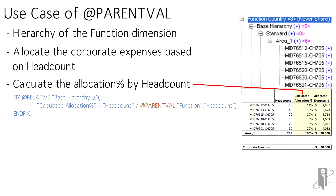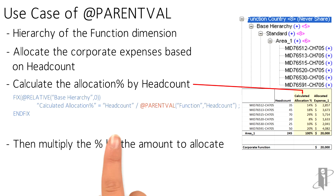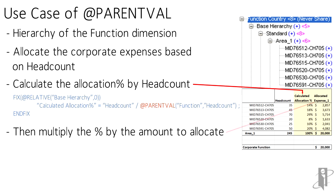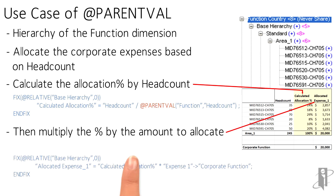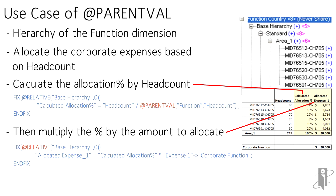Using atParentFile, the dimension name is placed, which in this case is function, and the member to capture is headcount. Lastly, you multiply the allocation percent by the amount to allocate, and this piece is the total expenses for the corporate function, which is $20,000. There you have an example of how the atParentFile function is used.